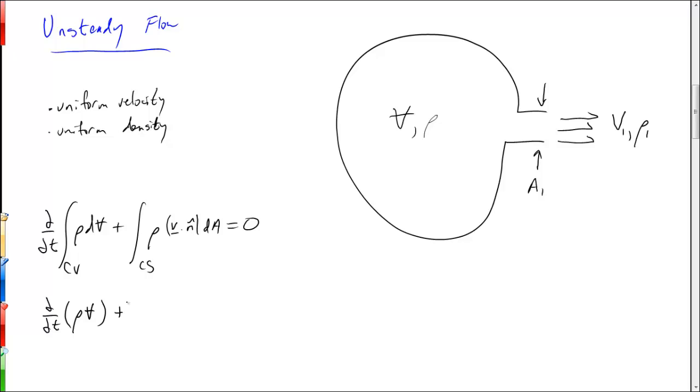Well looking at the control surface, if we assume that the velocity is a constant across the surface and the density is constant across the surface then this is all going to just reduce to rho1 v1 A1